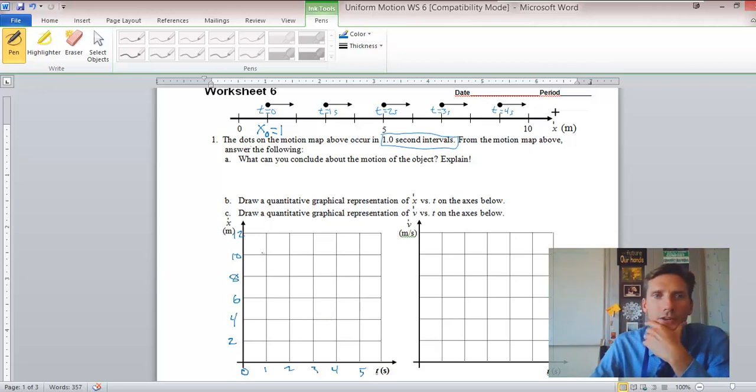So it says draw a quantitative graphical representation. So that's why we have the scale to make it quantitative. And it looks like at zero, the position is one. So we're going to have a data point right here. And at one, the position is three. So I know that because on the scale, we have three, four, five, et cetera. So three is going to be right here.